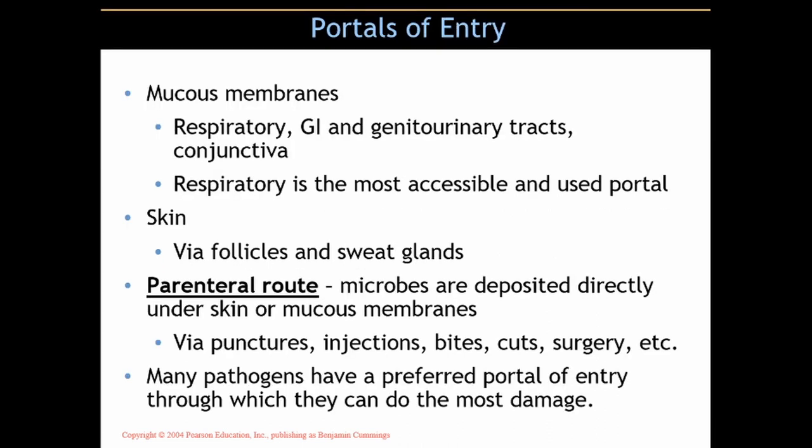One thing we want to look at are portals of entry, and we'll finish with portals of exit at the end of the chapter. Portals of entry include the mucous membranes — especially the respiratory tract, which is the most accessible and commonly used portal in the body — then the gastrointestinal and genitourinary tracts, and the conjunctiva of the eyes. The average adult has over 4,000 square feet of mucous membranes, making this a humongous surface area for bacteria to access and gain entry into the body.